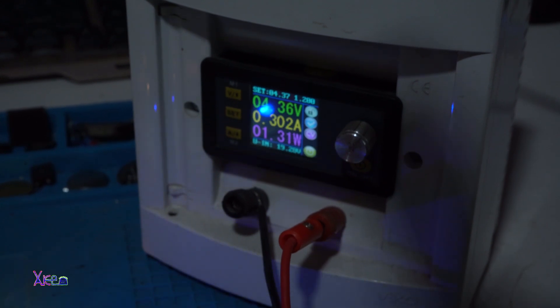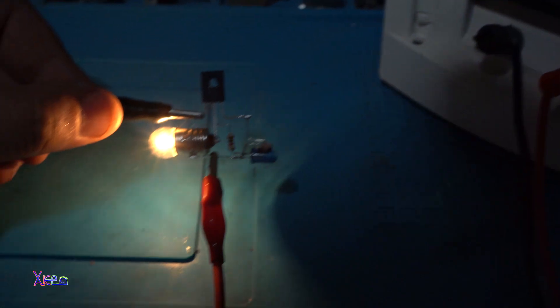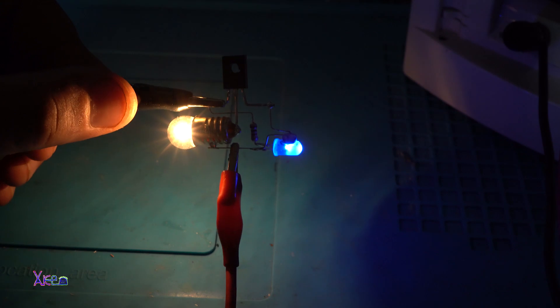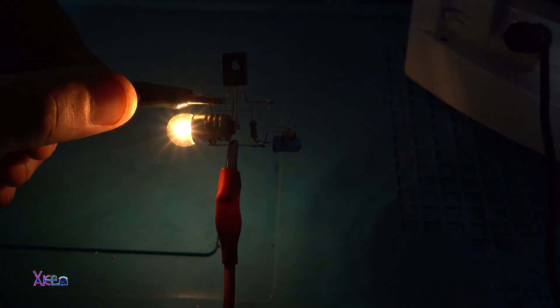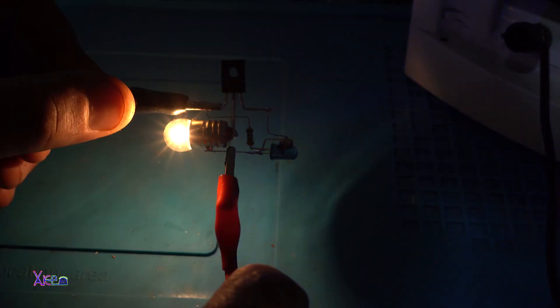You can see that it is pulling around 300 milliamps. And look how this simple circuit works fine in action. Using only a self-blinking LED, a photo resistor, one NPN transistor and a bulb.